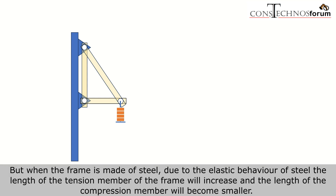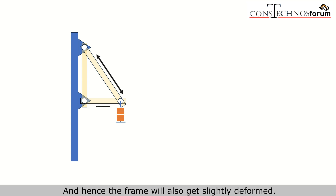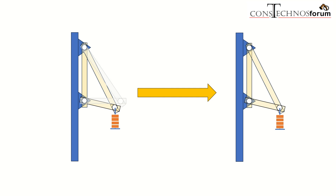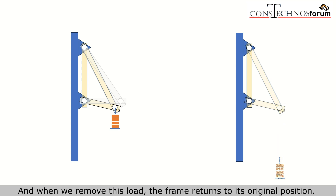But when the frame is made up of steel, due to the elastic behavior of steel, the length of the tension member of the frame will increase and the length of the compression member will become smaller, and hence the frame will also get slightly deformed. When we remove this load, the frame returns to its original position.